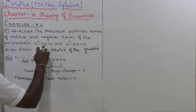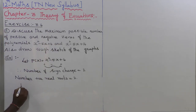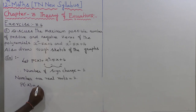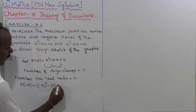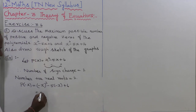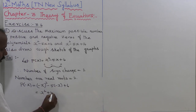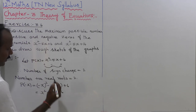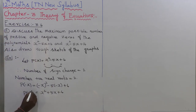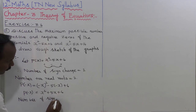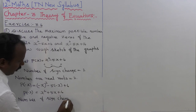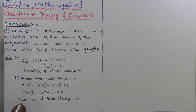Now we are going to find the negative roots of p of x, so we compute p of minus x. p of minus x is equal to minus x whole squared minus 5 times minus x plus 6, which equals x squared plus 5x plus 6. The number of sign changes in p of minus x is equal to 0.